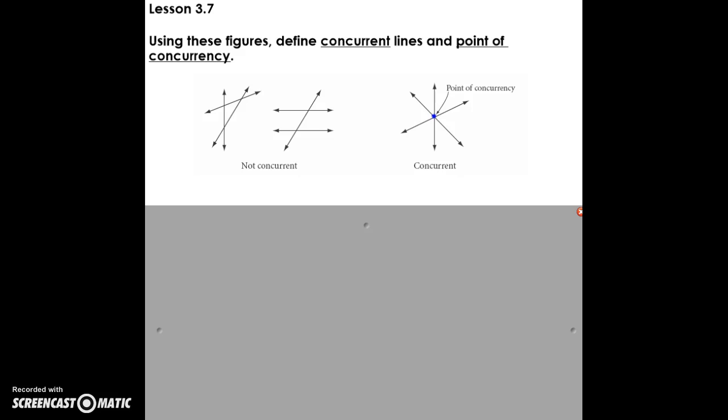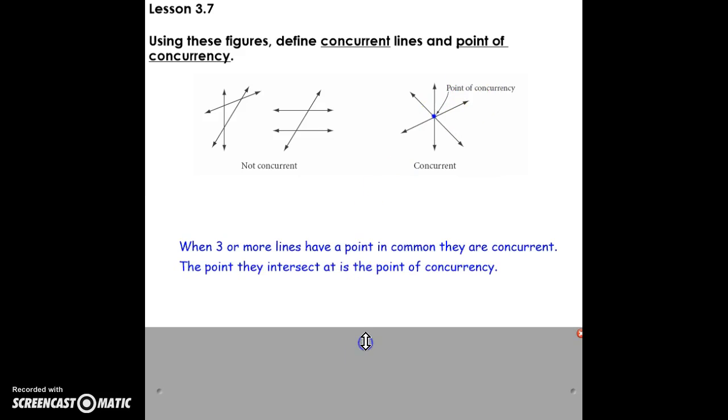So first we're going to define the word concurrent, and here you can see examples of lines that are not concurrent and lines that are concurrent. Notice all of these lines come together at one intersection point, and that point is called the point of concurrency. When it's three or more lines, it's called a point of concurrency or they're concurrent.